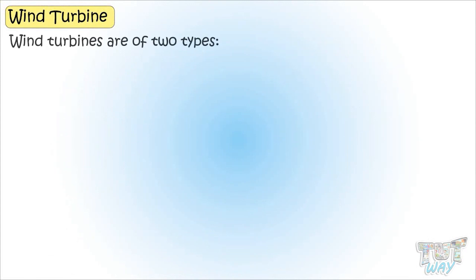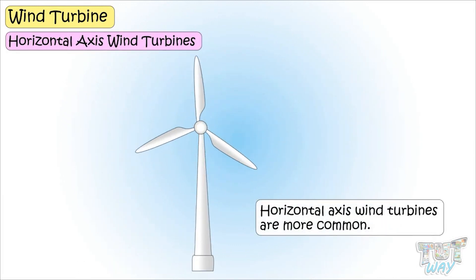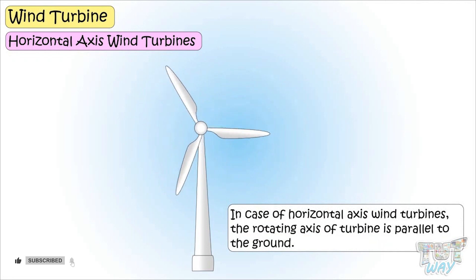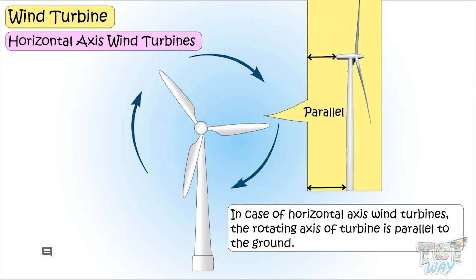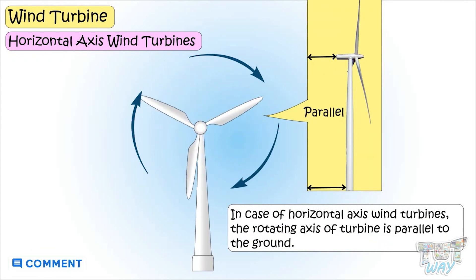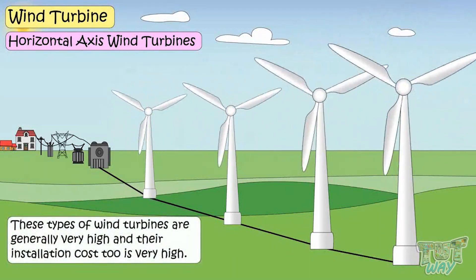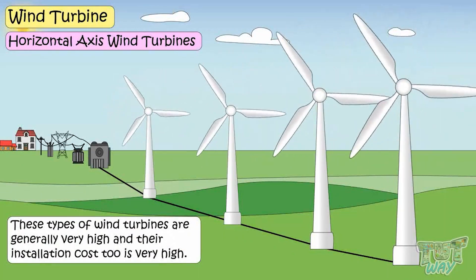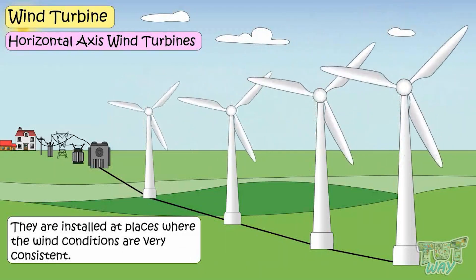Wind turbines are mainly of two types: horizontal axis and vertical axis. Horizontal axis wind turbines are more common. The rotating axis of the turbine is parallel to the ground, and they are mainly used in large commercial projects producing electricity at scale. Their installation cost is very high, and they are installed at places where wind conditions are very consistent.